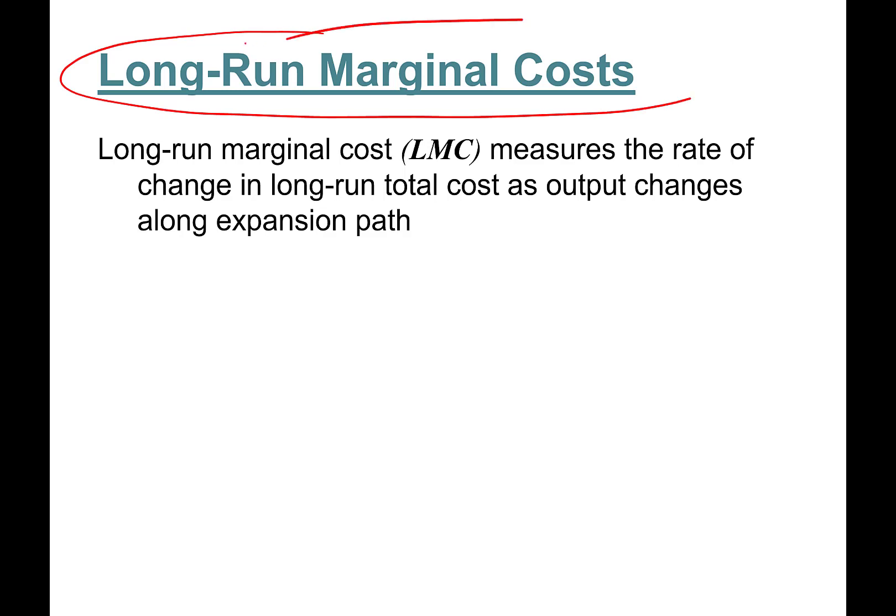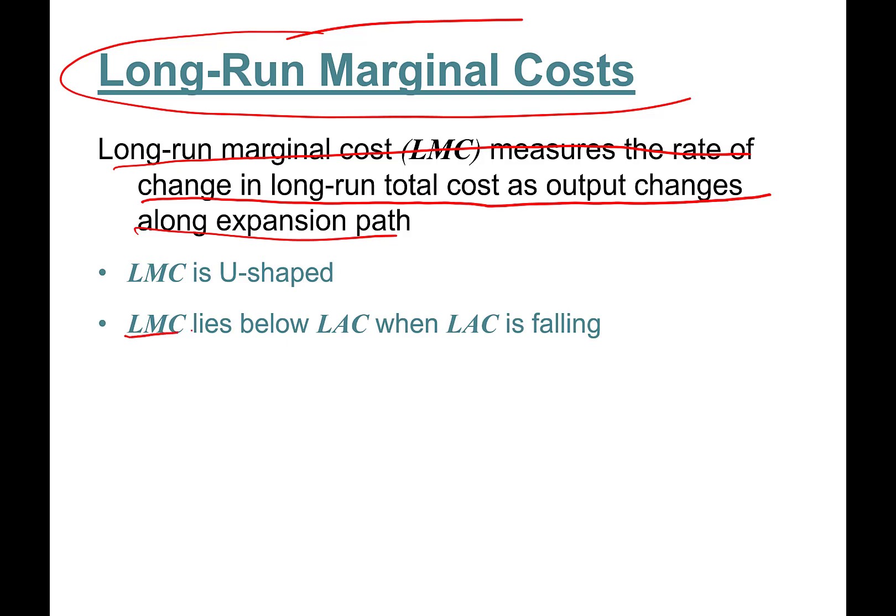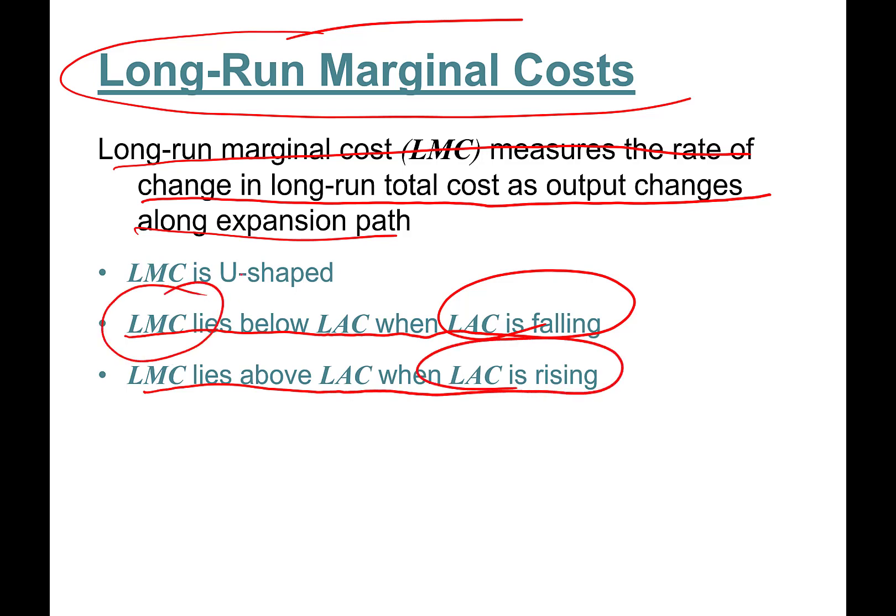Long-run marginal cost (LMC) measures the rate of change in the long-run total cost as output changes along the expansion path. The formula is exactly similar to the short-run marginal cost. Long-run marginal cost is also U-shaped. LMC lies below LAC when LAC is falling, and LMC lies above LAC when it is rising.